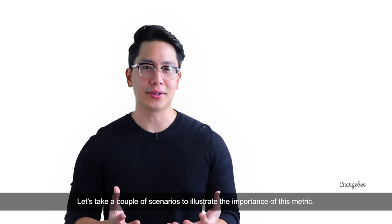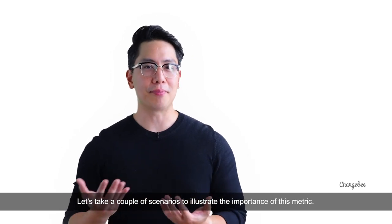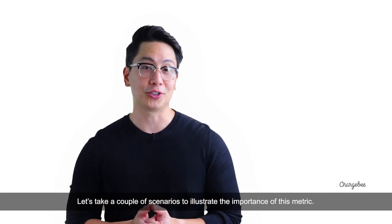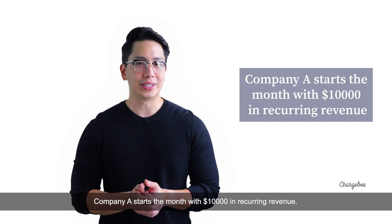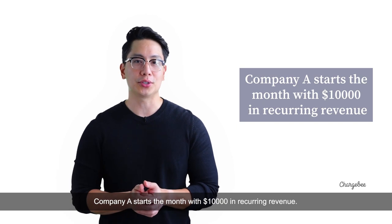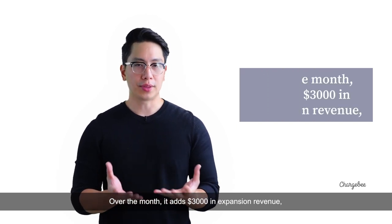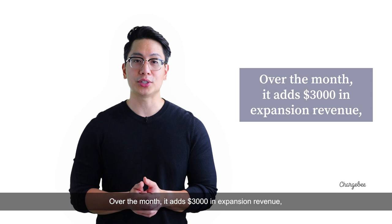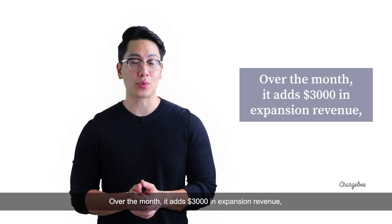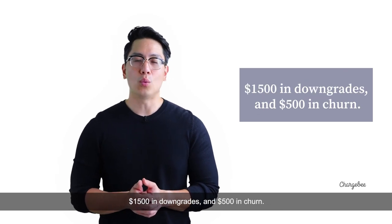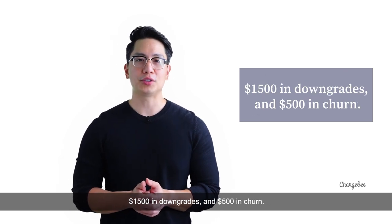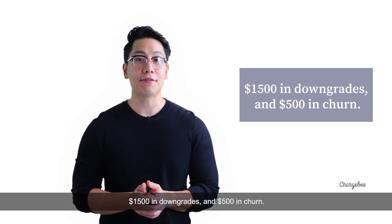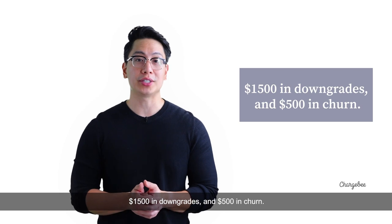Let's take a couple of scenarios to illustrate the importance of this metric. Company A starts the month with $10,000 in recurring revenue. Over the month, it adds $3,000 in expansion revenue, $1,500 in downgrades, and $500 in churn.